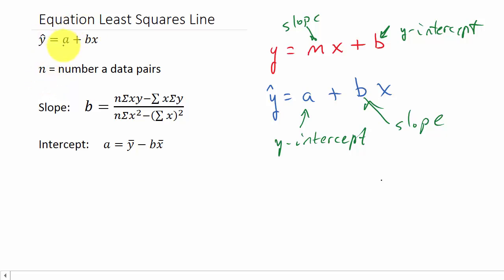To find the equation, n is the number of data pairs you have. The slope b, the number in front of x, is this formula: n times the sum of xy minus the sum of x times the sum of y, over n times the sum of x squared minus the sum of x squared. The intercept a equals y bar minus b times x bar, where y bar is the mean of the y data values and x bar is the mean of the x data values.